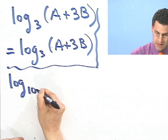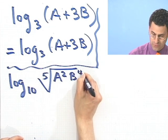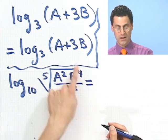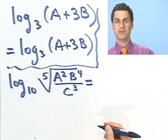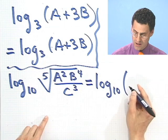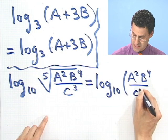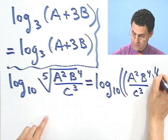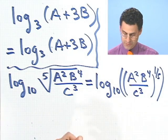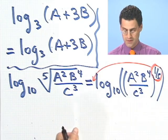All right. One last one. Log base 10 of the fifth root of a squared b to the fourth, all divided by c cubed. Looks really awful, but watch how we can do this. First of all, a fifth root is the same thing as raising something to the one fifth power. So, in fact, this is just log base 10 of a squared b to the fourth over c cubed. And I raise the whole thing to the one fifth power. Well, now that one fifth by one of these laws of exponent and one of the laws of logarithms, that one fifth log of something to a one fifth, I can bring that out in front.